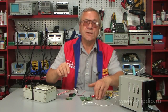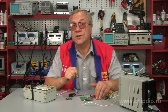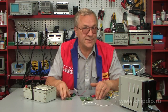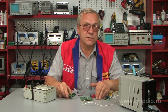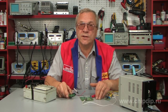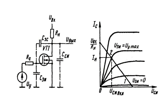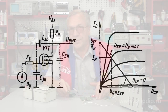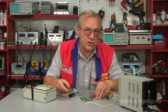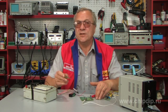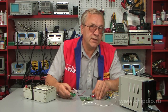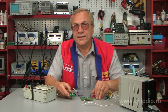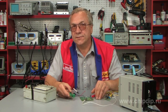Transistor switches can also be based on field effect transistors. Their operational principle is similar to that of electronic switches on bipolar transistors. Digital switches on field effect transistors consume lesser control current and provide a galvanic isolation of input and output circuits. However, their performance is slower compared to bipolar transistors.